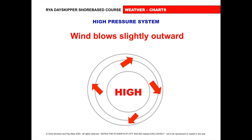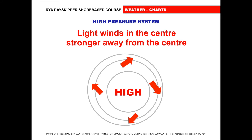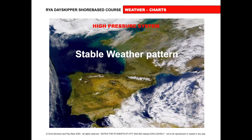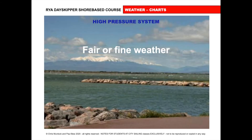The wind blows slightly outward, with light winds in the center where there's a big gap between isobars. As we move away from the high pressure center the winds get stronger. Looking at this satellite picture, the center of the high is based over the Bay of Biscay, giving fair or fine weather — not much cloud cover, clear sky, a beautiful sailing day.